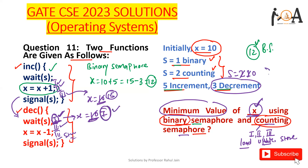To recap: in binary semaphore, only one thread is available, so operations are sequential — perform increments, then decrements — and the minimum value of x is 12. In counting semaphore, we can switch between the increment and decrement functions at any time, and our target is to find the minimum value of x.